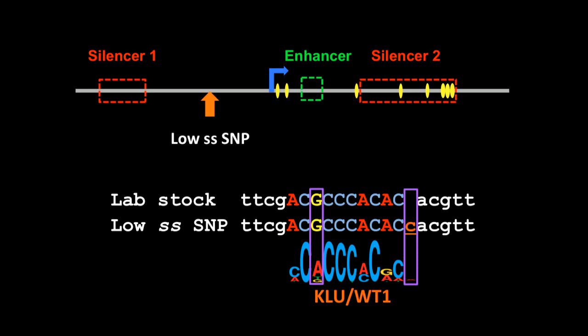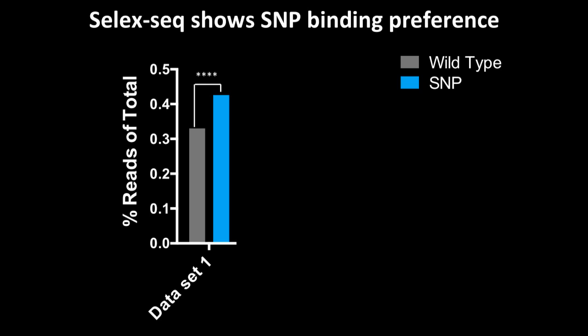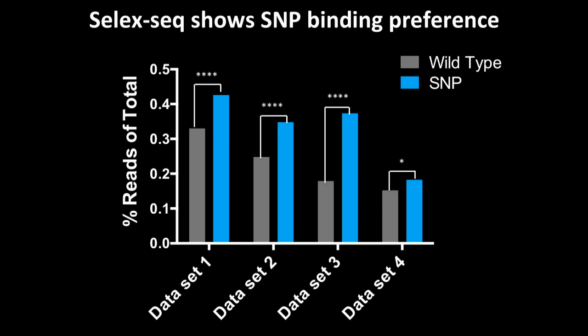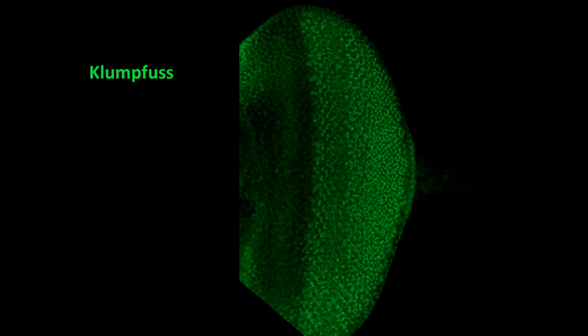So to get at this question, we analyzed some pre-existing SelectSeq data that people did for Clue. And what we found is that Clue seems to prefer sequences that contain the low spineless SNP. And we saw this for one dataset as well as the other three, again suggesting that Clue binds better in the presence of the low spineless SNP.